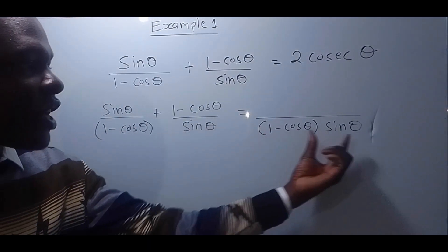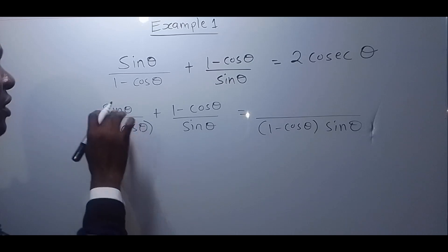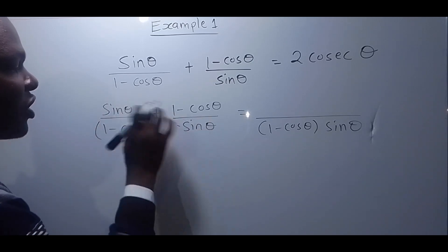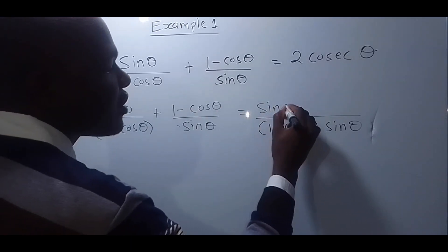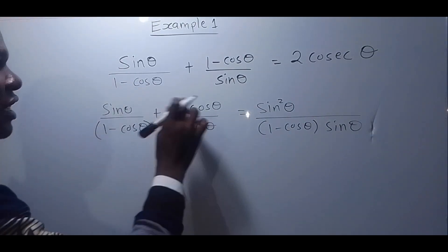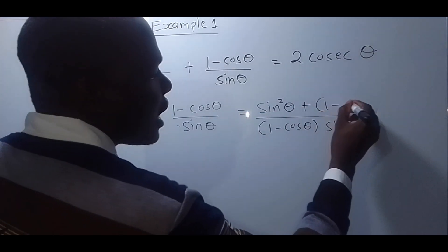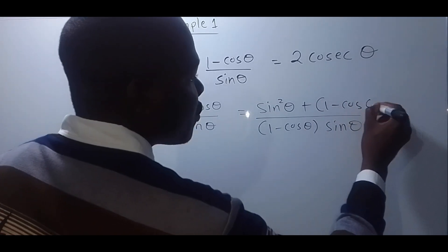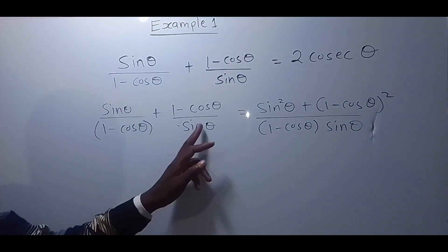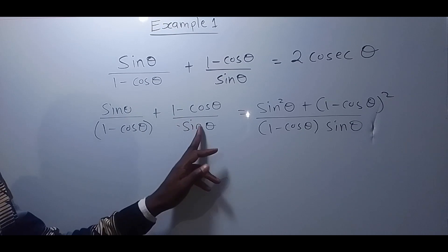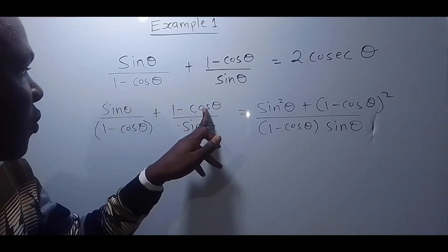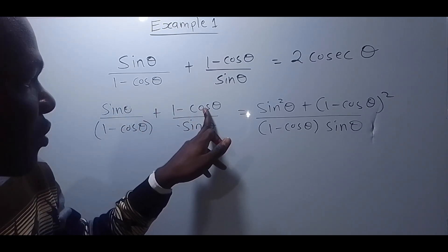Using cross multiplication: 1 minus cos theta goes into the first term giving sin theta times sin theta, which is sin squared theta. Then that times that gives plus 1 minus cos theta squared. So the numerator becomes sin squared theta plus 1 minus cos theta squared, all over 1 minus cos theta times sin theta.